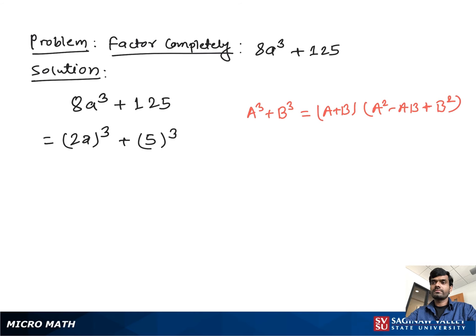So if you suppose 2a as a and 5 as b, you can write (2a + 5) times (4a² - 10a + 25). We cannot further simplify or factor, so this is our final complete factorization.